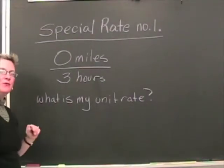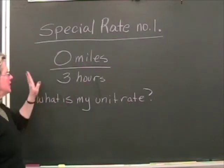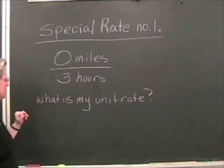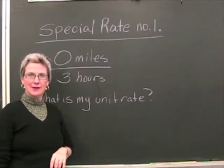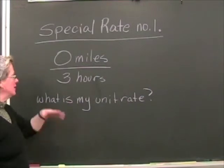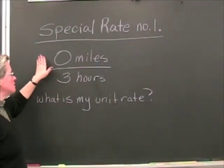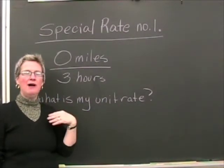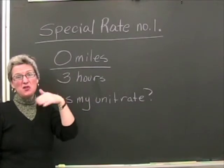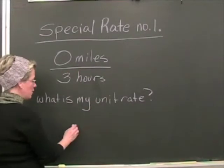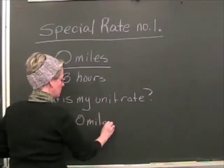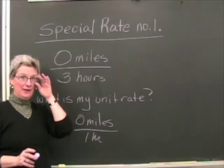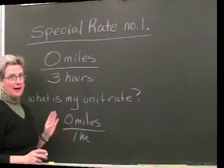Let's say I tell you that I can travel 0 miles in 3 hours, and I ask you, what is my unit rate? Well, let's think about this. This is basically a division problem. 0 miles—it takes me 3 hours to go 0 miles. So how far am I going in 1 hour? 0 divided by 3 is 0. So my unit rate is 0 miles per 1 hour. Basically, I am sitting in a chair. I am not moving. This physically can happen.